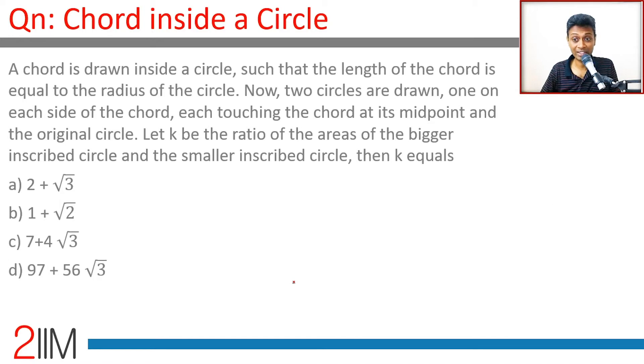A chord is drawn inside a circle such that the length of the chord is equal to the radius of the circle. Now two circles are drawn, one on each side of the chord, each touching the chord at its midpoint and the original circle. Let k be the ratio of the areas of the bigger inscribed circle and the smaller inscribed circle.